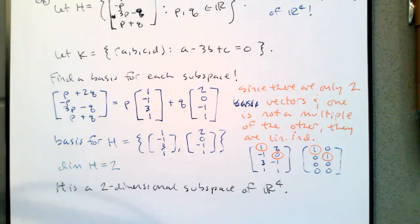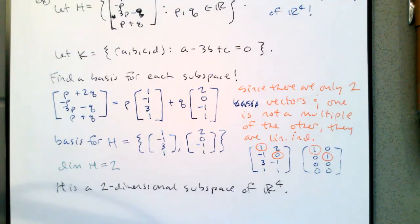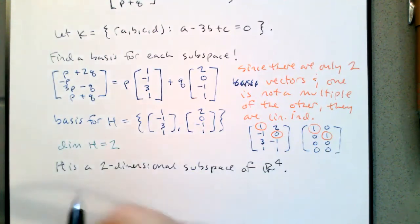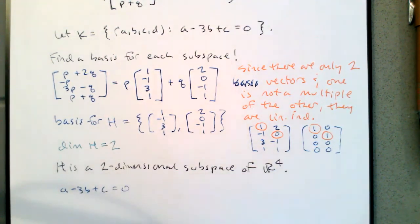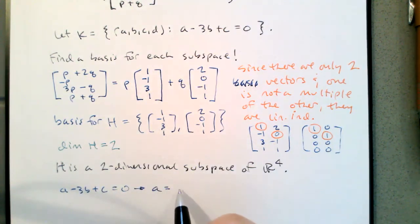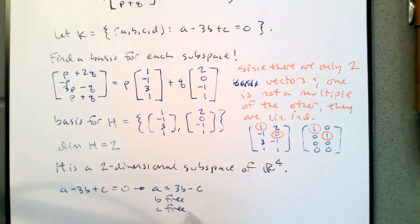Now let's find a basis for K. K is the set of solutions to the homogeneous equation A minus 3B plus C equals zero. Notice that A is related to B and C, but D has nothing to do with A, B, and C. Looking at this equation: A equals 3B minus C. B is free, C is free, and D isn't even in the equation but is definitely part of this, so D is its own free variable.